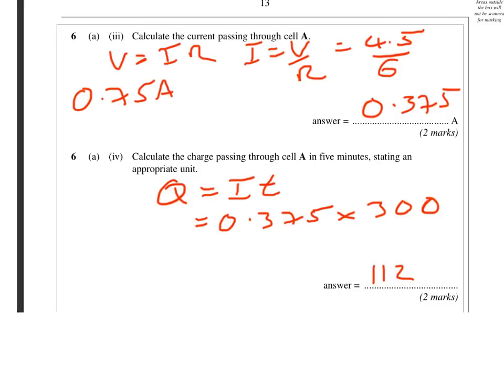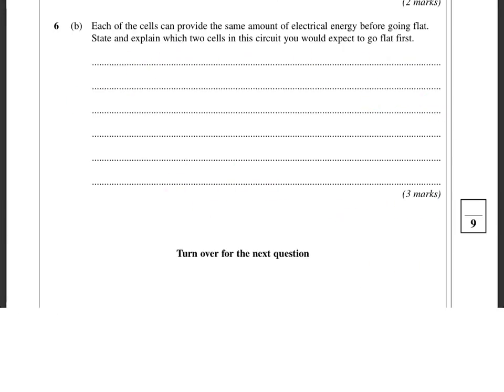And it does ask here. You've got to be careful here. Easy way to throw away marks. State an appropriate unit. It's charge. So capital C for Coulombs is fine. So that's the calculation part of the questions out of the way. It's a nine mark question though. And these last three marks, quite difficult actually. These are real discriminators.